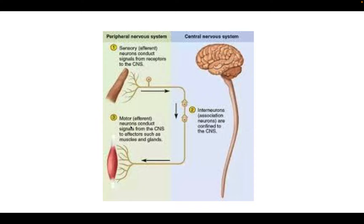We have motor or efferent — with an E. Neurons leave from the central nervous system and go out to the body. They're motor because a lot of them are used to move our muscles. Efferent, E — exiting. So signals go from the central nervous system out to the peripheral nervous system.